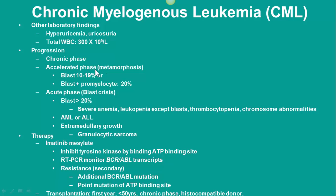Without effective treatment, all CML can progress to acute myelogenous leukemia. Before reaching the acute phase, some patients go through an accelerated phase, diagnosed by 10–19% blasts in circulation or 20% of total blasts and promyelocytes. Once blasts reach 20%, the disease transforms into acute leukemia with severe anemia, leukopenia, thrombocytopenia, and chromosome abnormalities. Blast crisis leukemia can be AML or ALL. Extramedullary growth can cause granulocytic sarcoma.